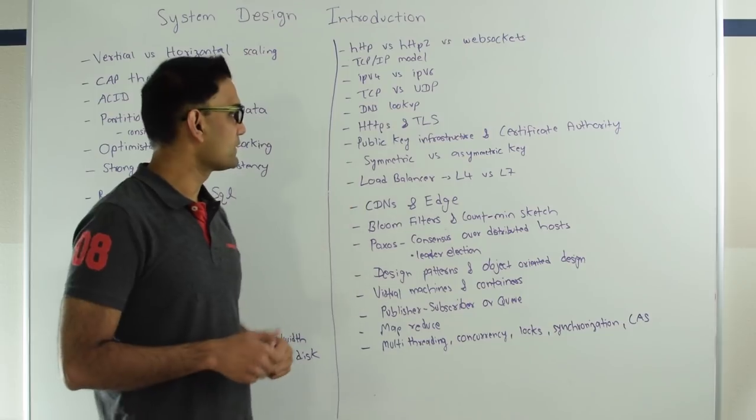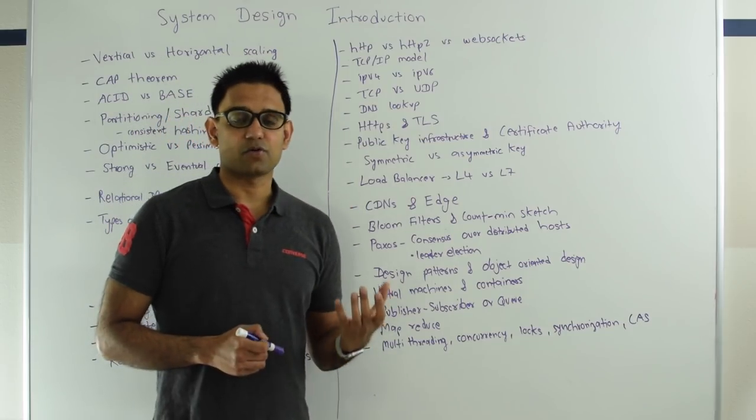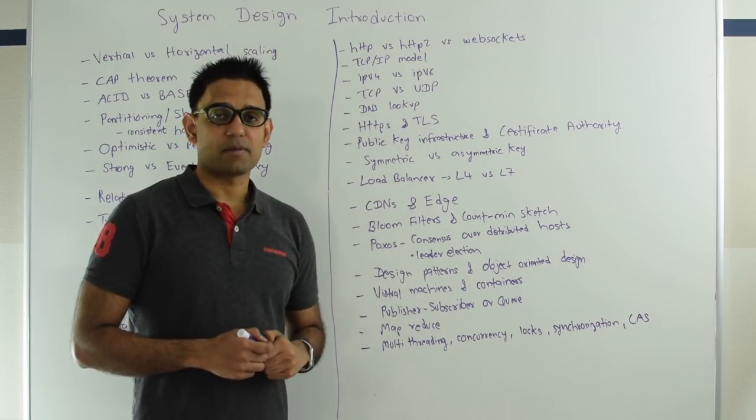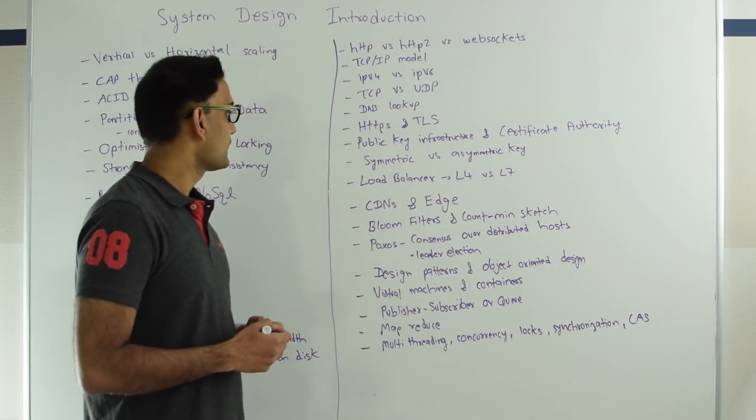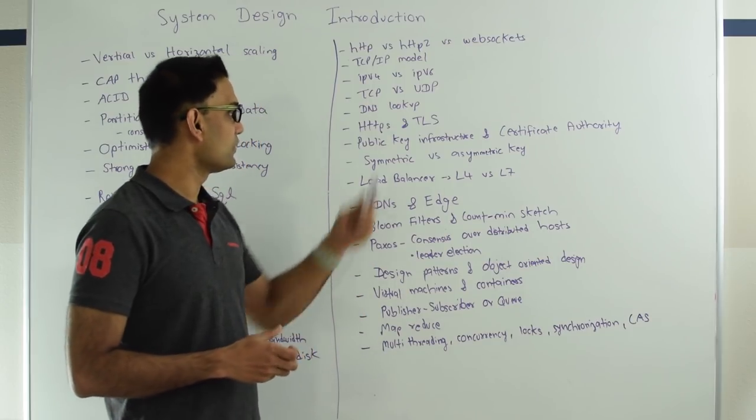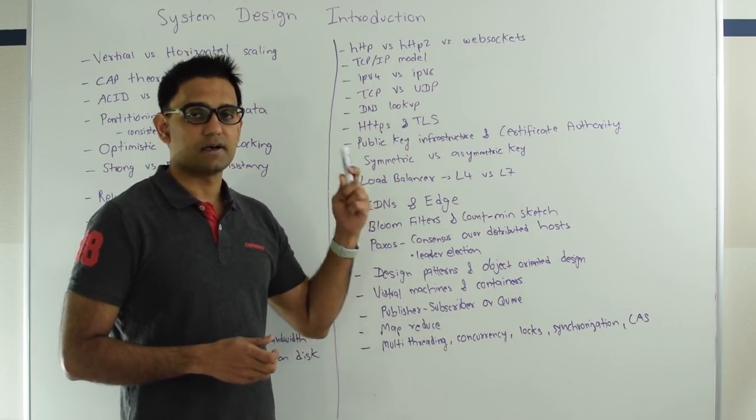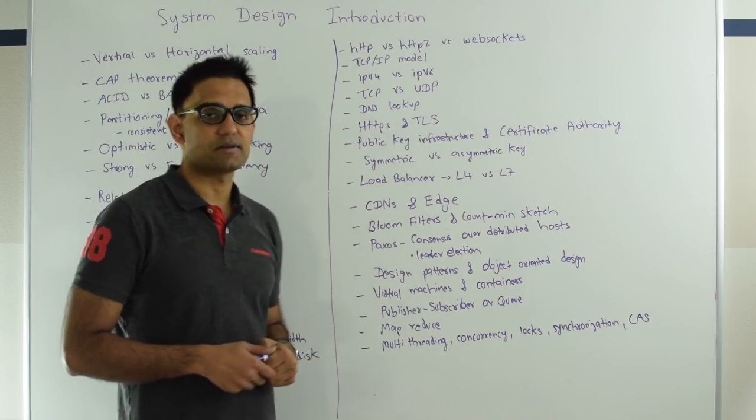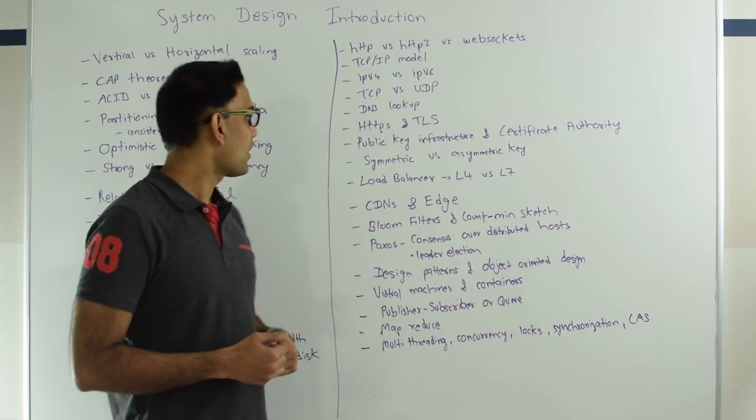Then we have TCP versus UDP. TCP is connection-oriented reliable connection while UDP is unreliable connection. So if you're doing a streaming of video then you are better off using UDP because although it's unreliable it's super fast. On the other hand if you're sending some documents then you're better off using TCP.